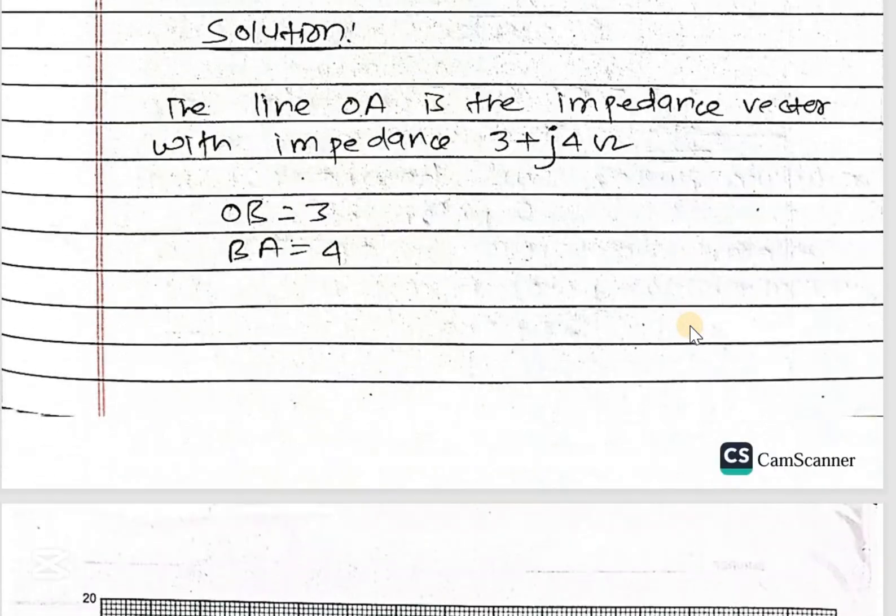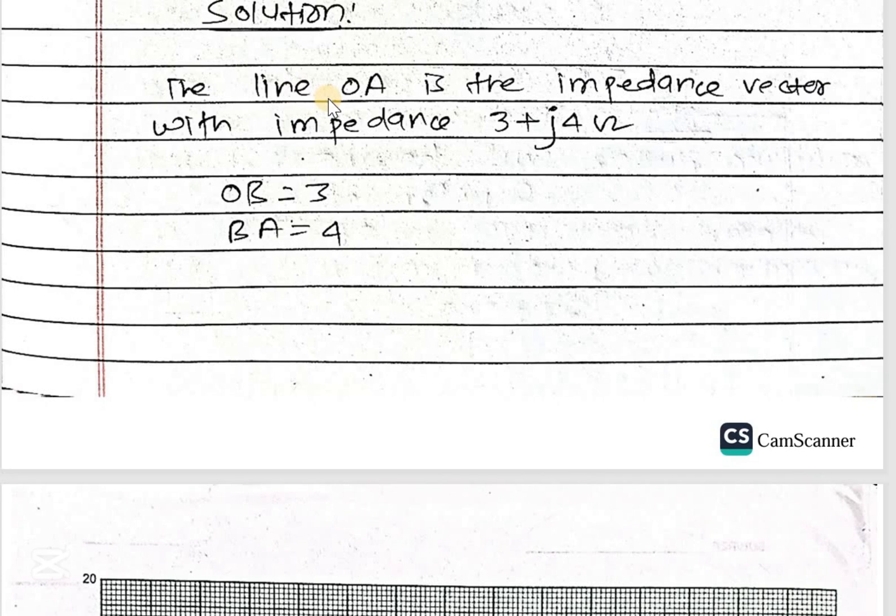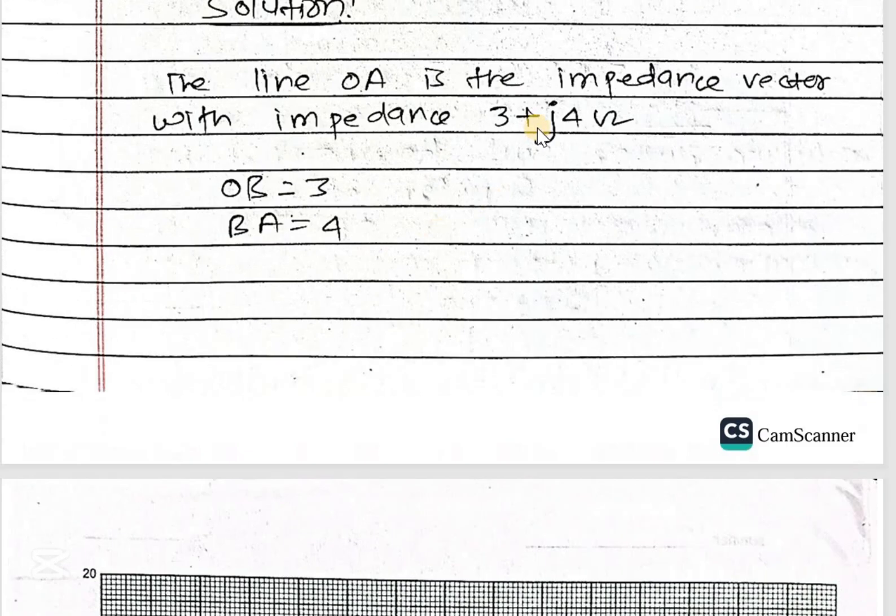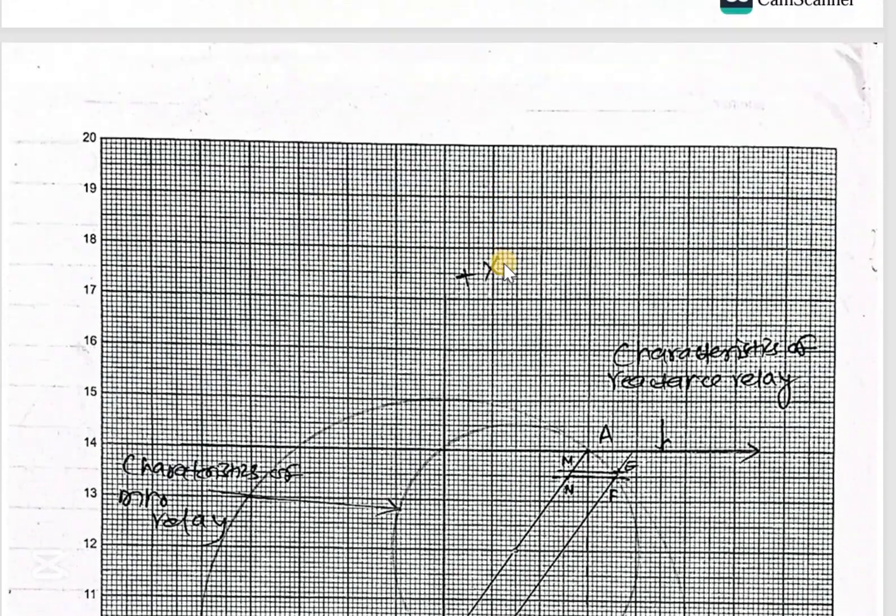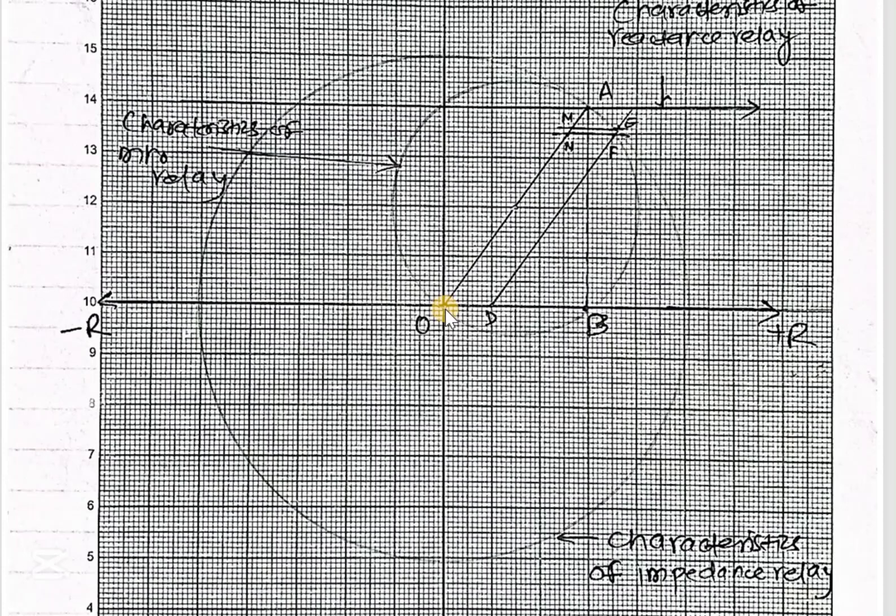First of all, the line OA is the impedance vector with impedance 3 plus j4. OB equals 3 and BA equals 4. We have to find the magnitude: the magnitude is the square root of 3 squared plus 4 squared, that is 5. So by taking a 5-unit arc at the center, we can draw this circle.